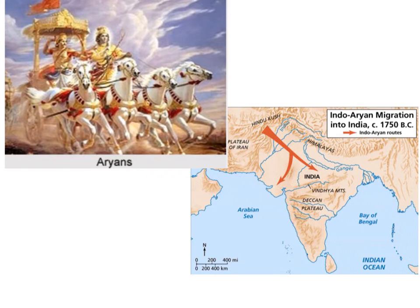Conquest by the Aryans: The invaders called themselves Aryans, which in their language meant noble or high born. They migrated, or moved, from their homeland in Central Asia. For several centuries, waves of these nomadic herders swept into India. As the Aryans crossed the plains of northern India, the people of the Indus River Valley huddled behind the crumbling walls of their cities. They were no match for Aryan warriors armed with bows and arrows and axes, and especially terrifying were their chariots drawn by charging horses. Gradually, the Aryans conquered the people of the Indus River Valley, and many became slaves of the invaders.